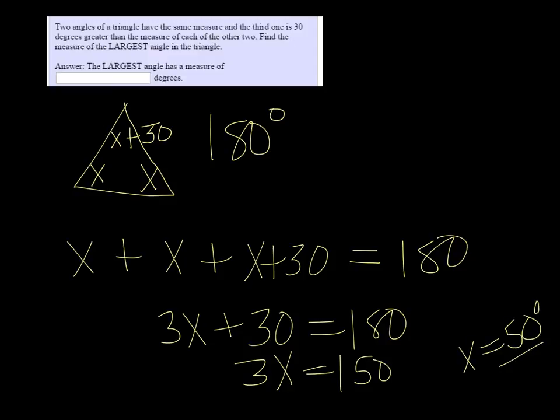So that is the measure of one of the smaller angles. To get the largest angle, we have to add 30 to that. So 50 plus 30 equals 80.